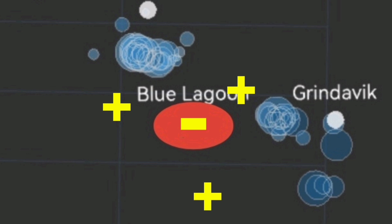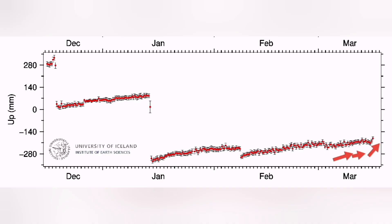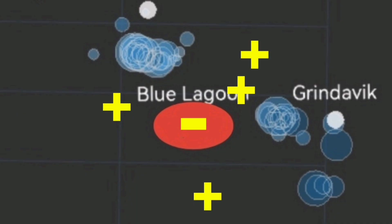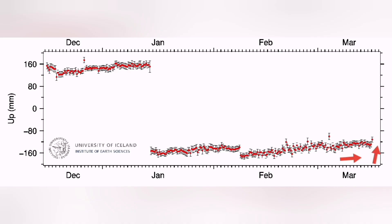Beyond the Thorbjorn, we have another site, ASVE, we call it. This is an abbreviation you see on the map. And we see uplift due to the magma accumulation.